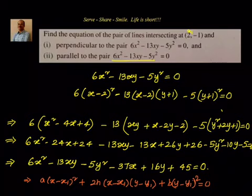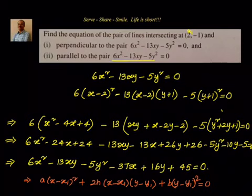In summary, the method is simple: wherever x appears in the given equation put (x−x1), and wherever y appears put (y−y1), keeping all coefficients unchanged. This gives the parallel pair through (x1, y1). In the next session, we will see how to find out the equation of the pair of lines intersecting at a point and perpendicular to the given pair.